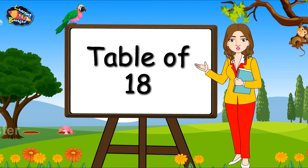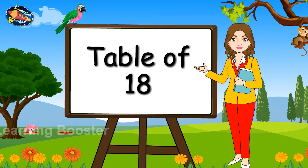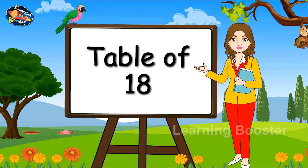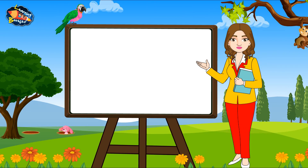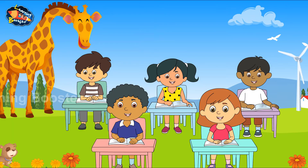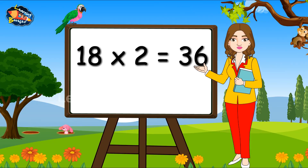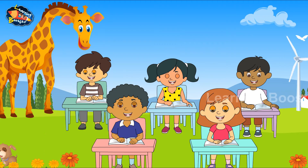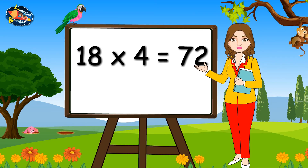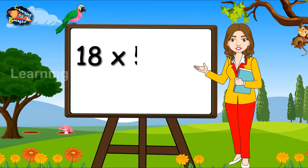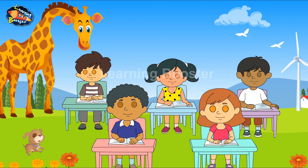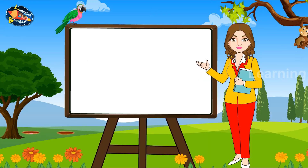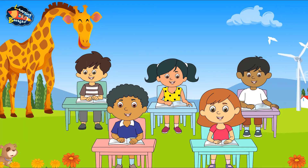Table of 18. 18 1s are 18. 18 2s are 36. 18 3s are 54. 18 4s are 72. 18 5s are 90. 18 6s are 108. 18 7s are 126.